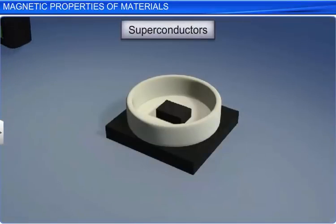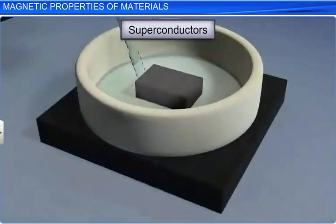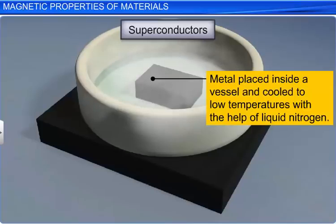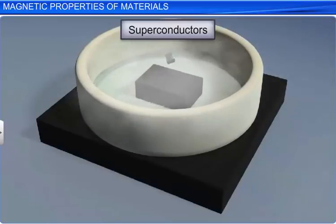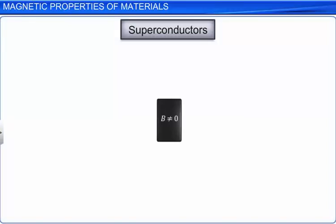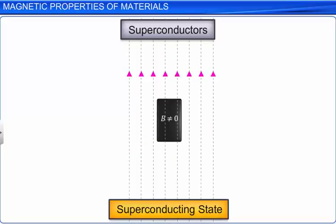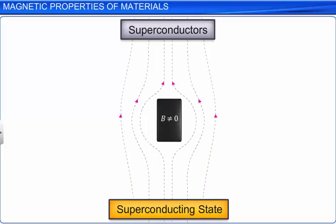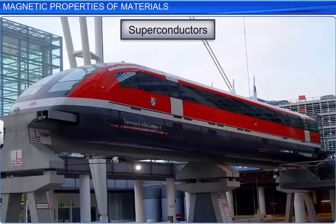Superconductors exhibit perfect diamagnetism. When a material is cooled below its transition temperature, it becomes a superconductor. In the superconducting state, the material behaves as a perfect conductor of electricity and a perfect diamagnetic material. When a material makes a transition from the normal state to the superconducting state, it actively excludes the magnetic field from its interior and hence repels magnets. This is called the Meissner effect. Maglev trains, or in other words, magnetically levitated superfast trains, work on the same principle.